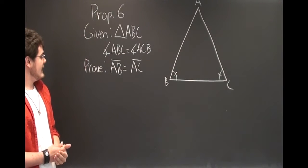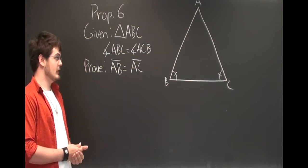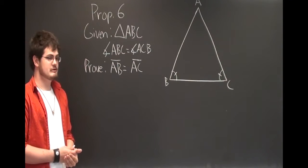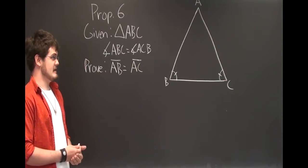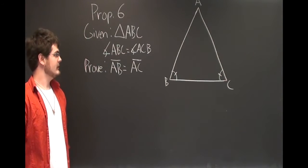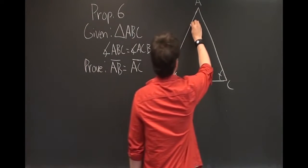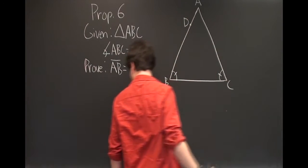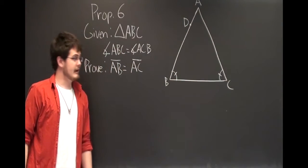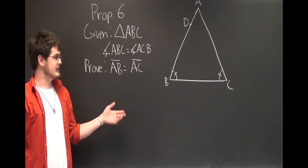So how are we going to prove that? We're going to start by saying that they aren't equal. First what we need to do is we need to cut off a bit of AB that we're going to say is actually equal to AC. We're going to call that DB, and in order to give ourselves a triangle we'll talk about, we're going to connect DC.